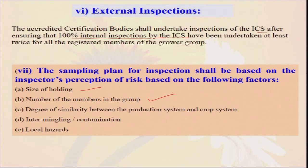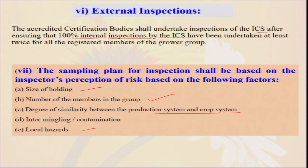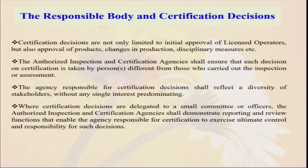The responsible body and certification decision: certification decisions are not limited only to initial approval of the license operators, but also include approval of products, changes in products, and disciplinary measures. All authorized inspection and certification agencies shall ensure that the entire process is properly followed, from inspection to certification, so that farmers can ultimately receive their organic certification and access international markets at premium prices.